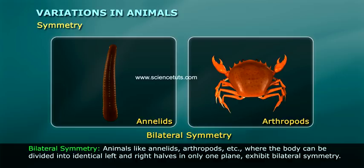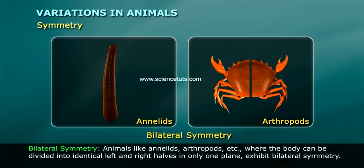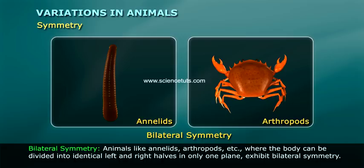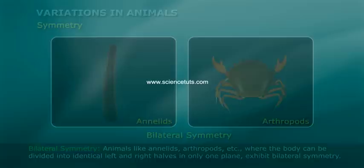Bilateral symmetry: animals like annelids, arthropods, etc., where the body can be divided into identical left and right halves in only one plane, exhibit bilateral symmetry.